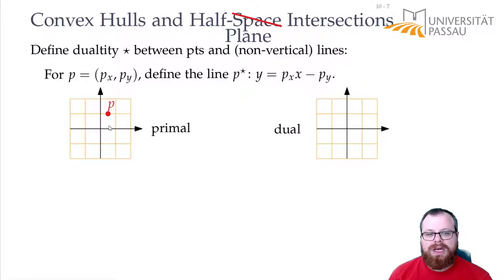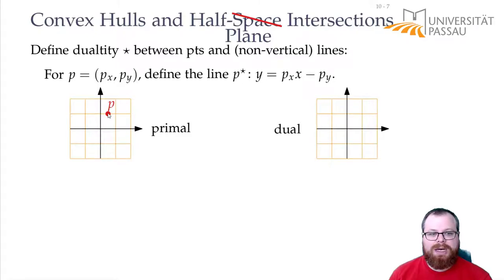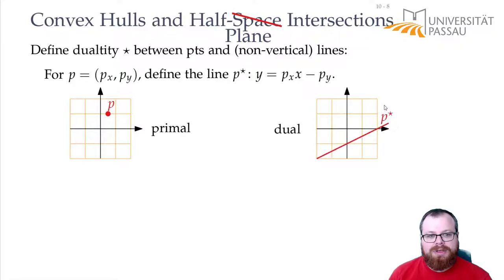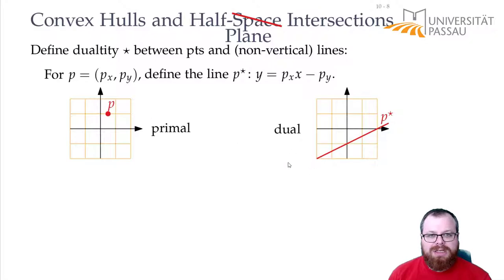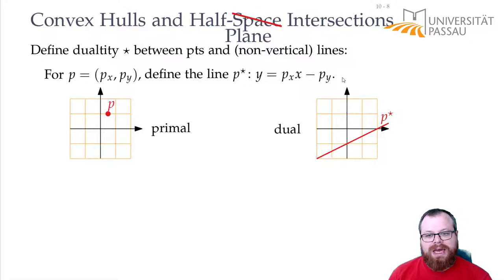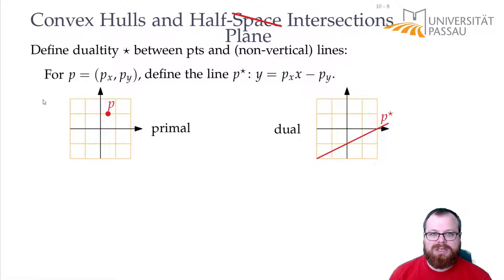In the dual, we have Px equal to about one-half and Py equal to one. So we have a line with slope one-half that intersects the y-axis at minus one. This is the dual line for this point. This way, we can map every point uniquely to a line in the dual. This is not a bijection because we cannot get the vertical lines, but for every non-vertical line, there is a point in the primal that gives us this line in the dual.